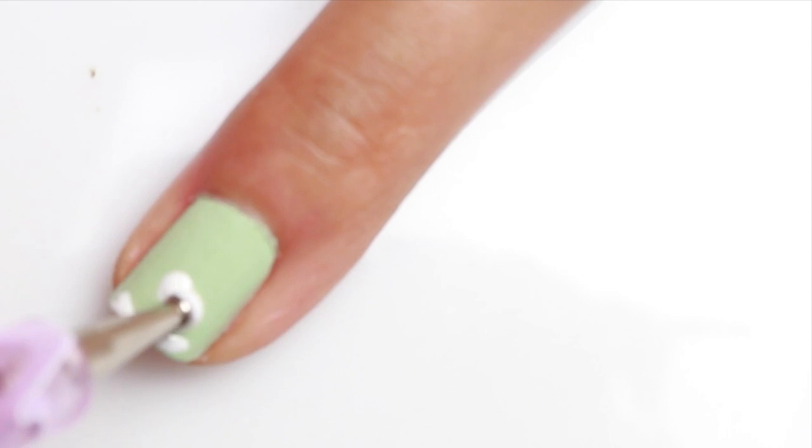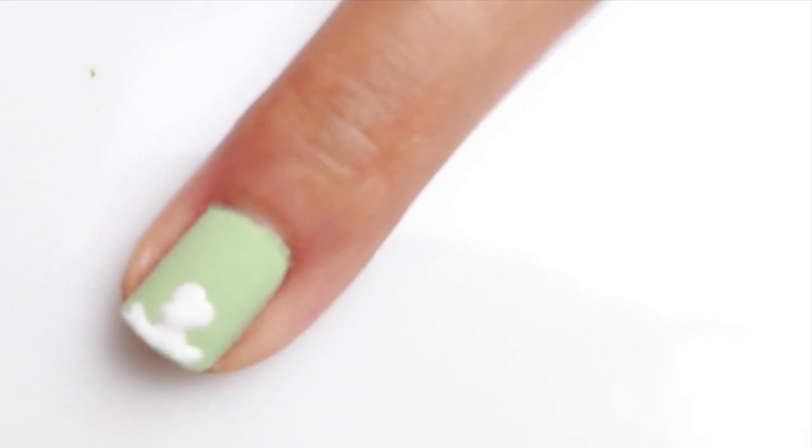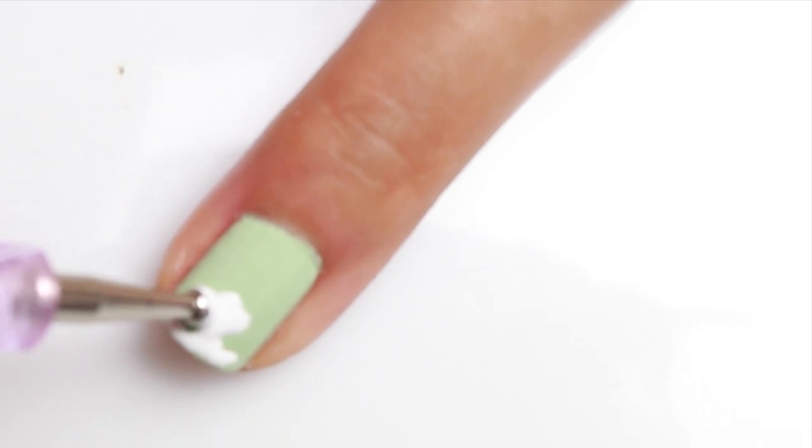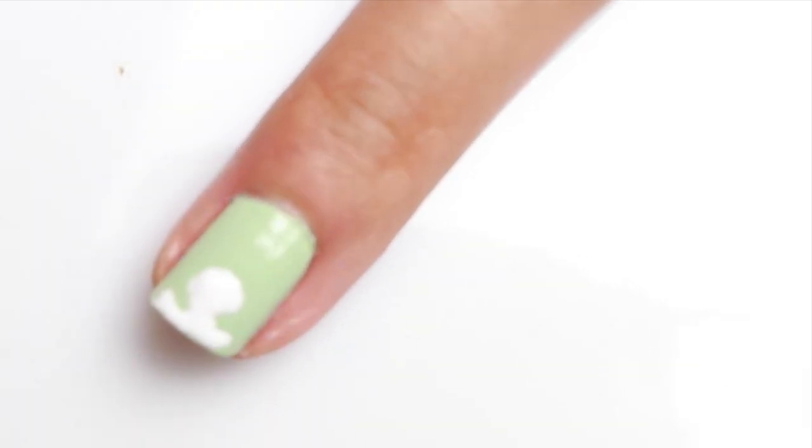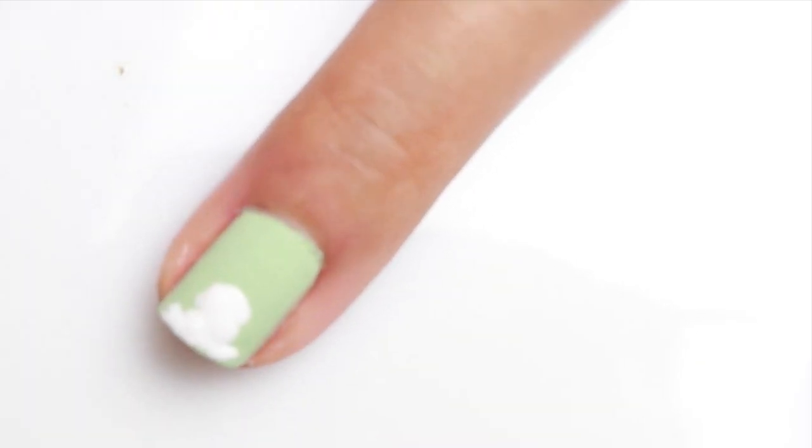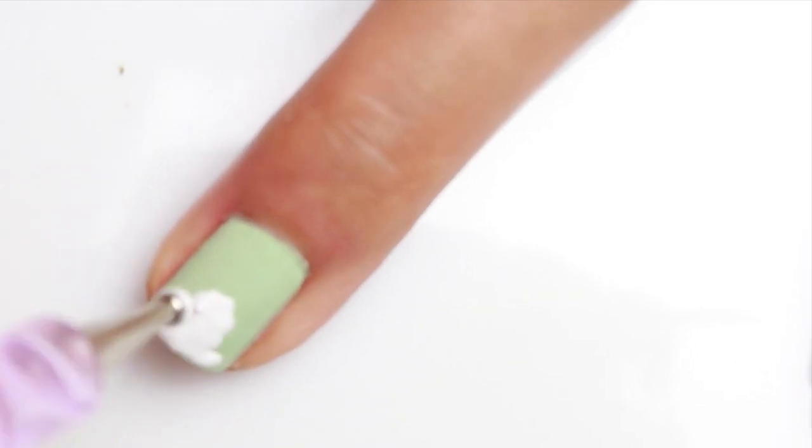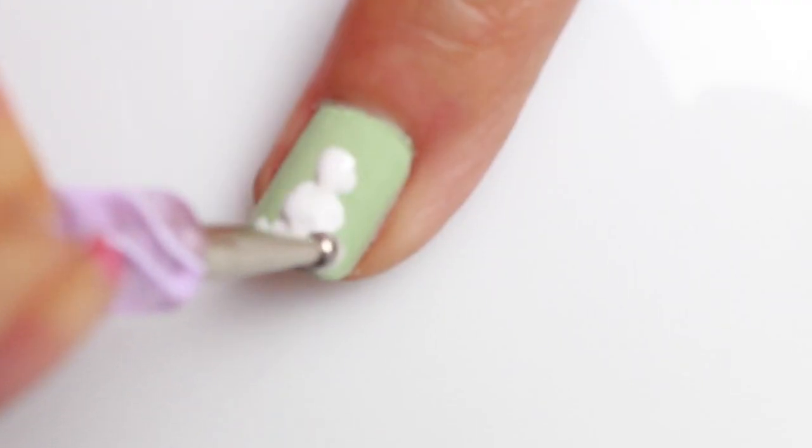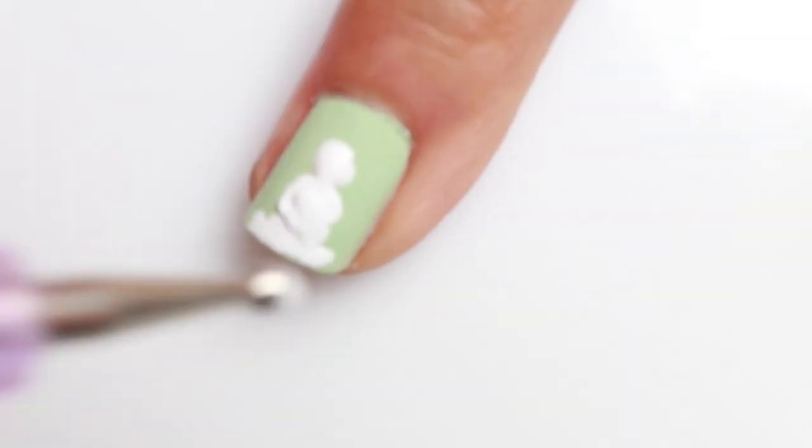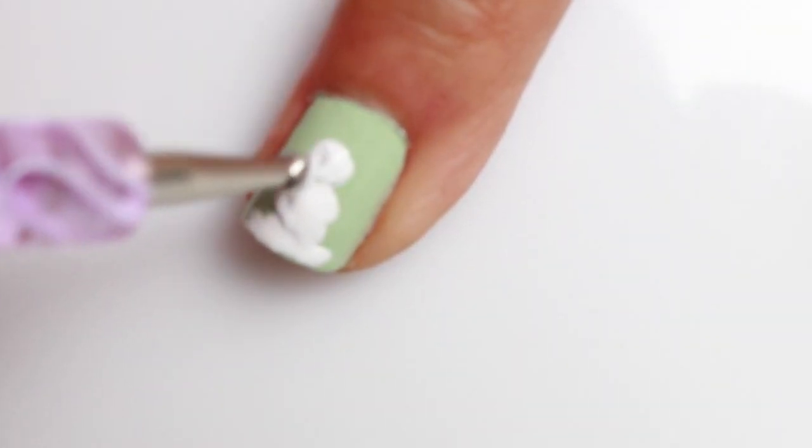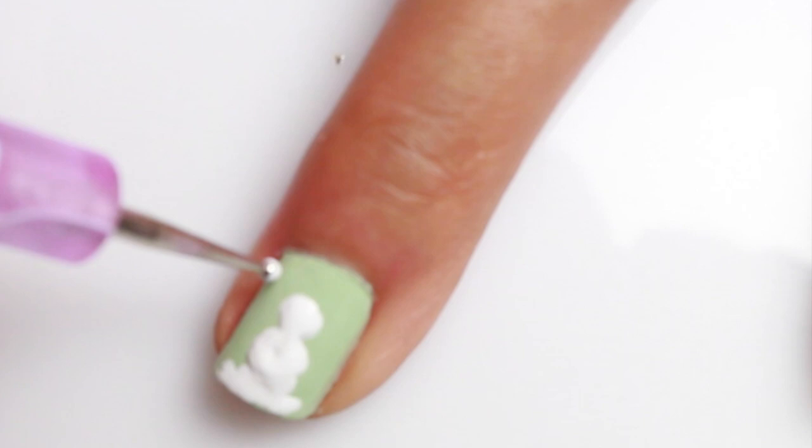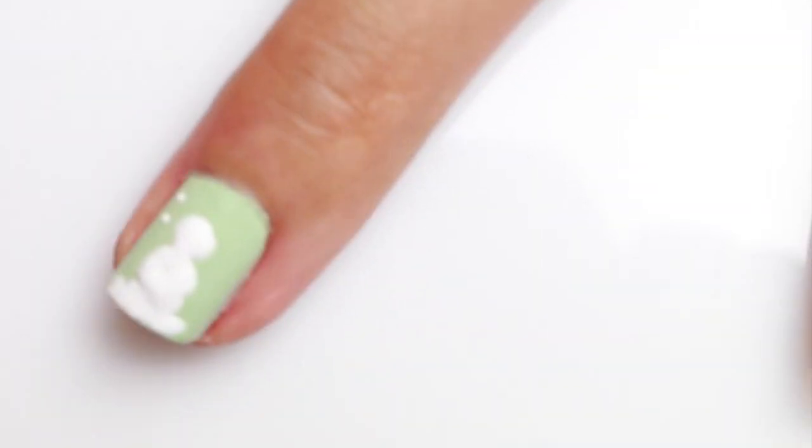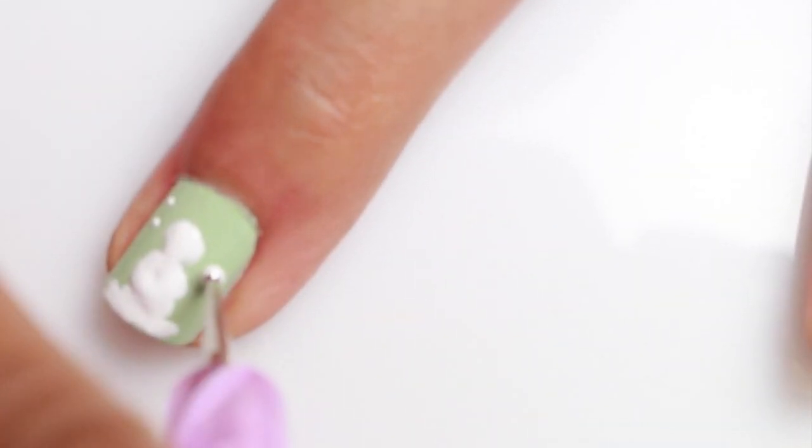Don't worry about making perfect circles. Just all you have to do is do small dots and just kind of put them next to each other, so it becomes a bigger circle. And this is the body. And then we're going to do the face. And don't forget to add a few drops of snow falling from the sky.